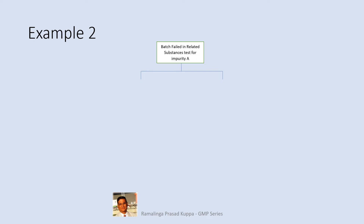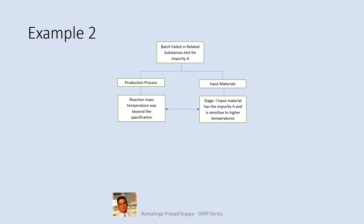Second example: the batch failed in related substances test for impurity A. Place the failure on the top of the tree. In the next level, investigate the production process and input materials. While reviewing the batch production record, it was found that the temperature of the reaction mass shot up significantly. The hypothesis is that this temperature shoot-up is responsible for the increase in impurity A, strengthened by the fact that the stage 1 input material has impurity A which is sensitive to high temperatures.